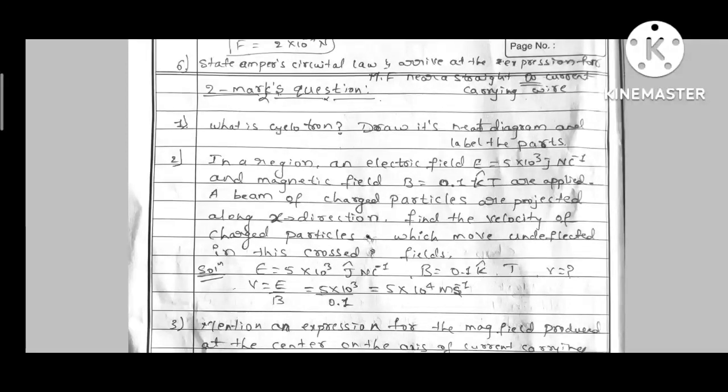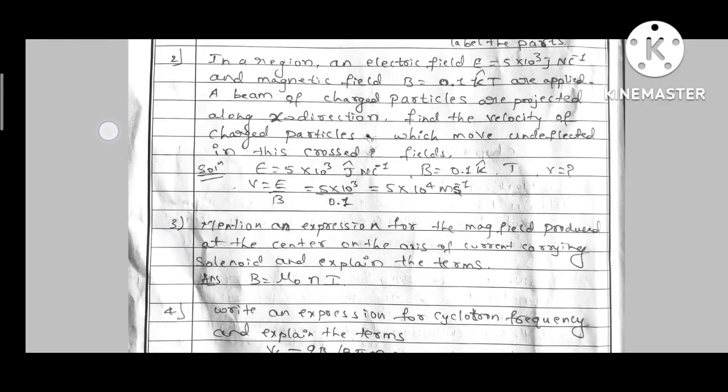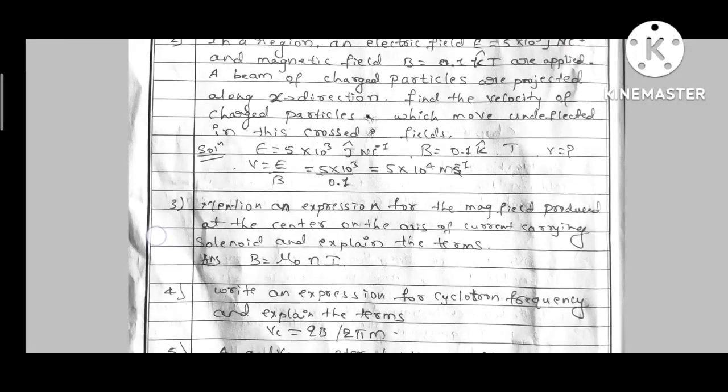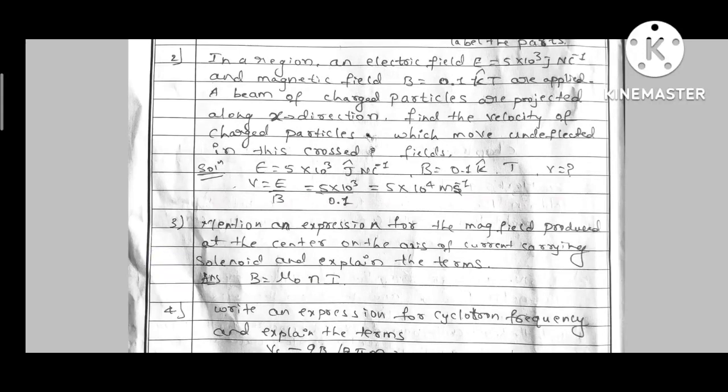What is cyclotron? Draw its neat label diagram. Then in a region an electric field is created, magnetic field is created. Then we have to calculate velocity. Velocity selector is created.